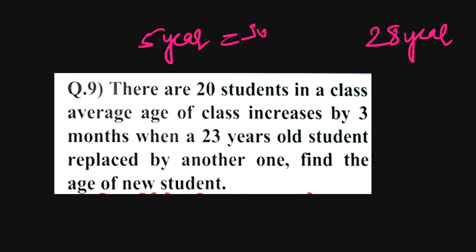5 multiplied by 12 means 60 months. 60 months divided by 20 means 3. 3 months every one will rise.